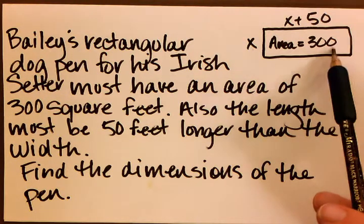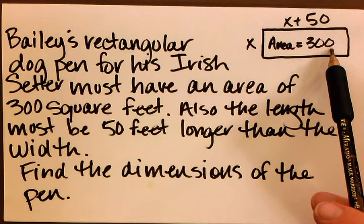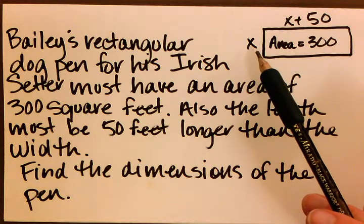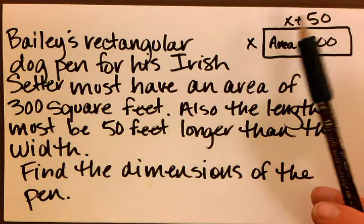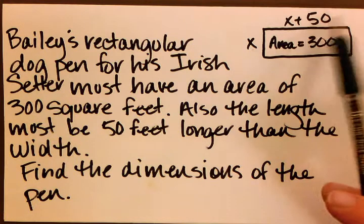So here's the pen. The area must be 300 square feet. We don't know the length or the width, but we can assign the width to be x, and because we know that the length is 50 feet longer, we can assign the length to be x plus 50.